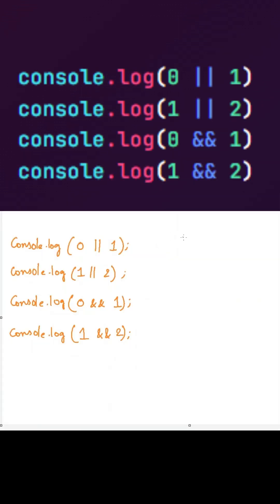When you get this type of question in the interview, don't directly give the answer — try to explain what these operators will do. Here we are using the OR operator and the AND operator. The OR operator will return the first truthy value. Here we are using the OR operator between a falsy value and a truthy value, so it will return the first truthy value, which is one, to the console.